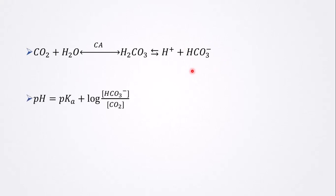There is a very important equation: pH equals pKa plus log of bicarbonate over carbon dioxide concentrations, respectively. This equation is called the Henderson-Hasselbalch equation.